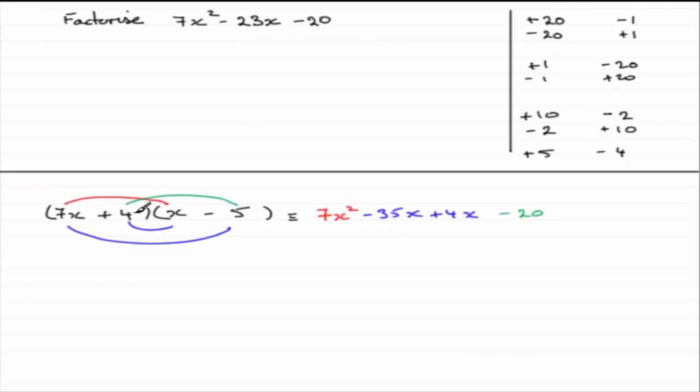So, let's try and reverse the numbers. Let's put a 5 here and a 4 there. Not to worry too much about the signs. We know we're going to get the minus 20 because we've got opposite signs. But what have we got now as far as the x terms go? Well, we've got 7x times minus 4, which is now going to be minus 28x. And 5 times x, which is going to be plus 5x. So, minus 28x plus 5x minus 23x.